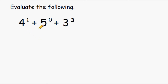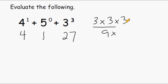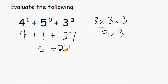In this expression we have to figure out all the parts containing exponents first, then add those three values together. Anything to the first power is just whatever the base is, so 4 to the first power is 4. Any number raised to the zero power is 1. And 3 to the third power is 27 — writing it in expanded form: 3 times 3 times 3; 3 times 3 is 9, and 9 times 3 is 27. Now adding: 4 plus 1 is 5, and 5 plus 27 is equal to 32.